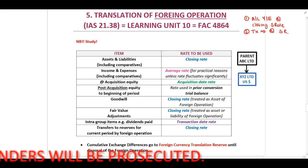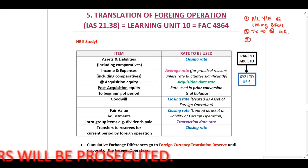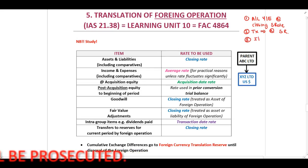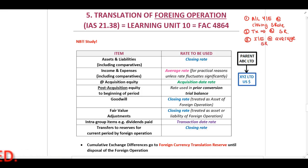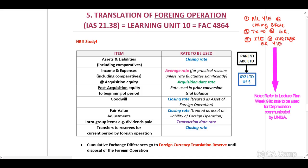And the third important one is that our income and expenses should be recognized at an average spot rate at year-end. These are the three important rules that you need to know for our following test.